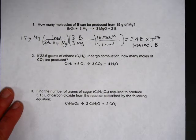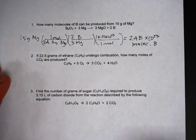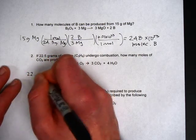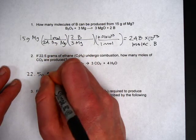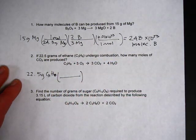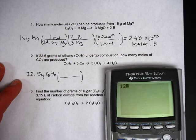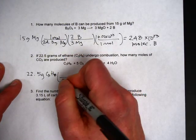Question number two. You have 22.5 grams of ethane undergoing combustion, how many moles of carbon dioxide produced? Okay 22.5 grams of ethane. That is C3H8. First up is to divide by the molar mass. You take 12 times 3 plus 8 and you get 44 for ethane.